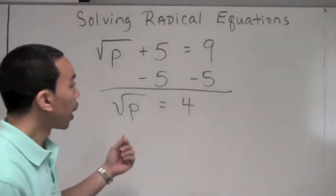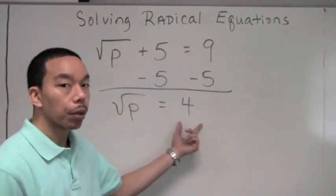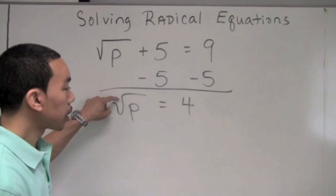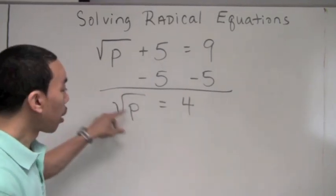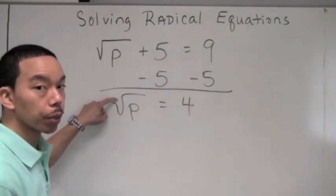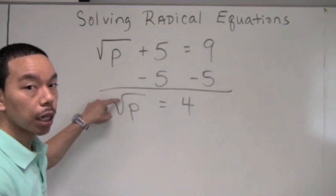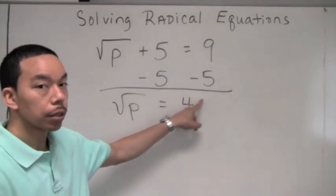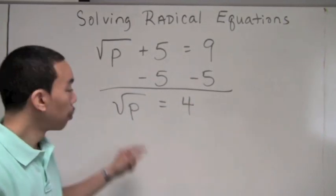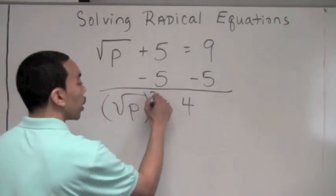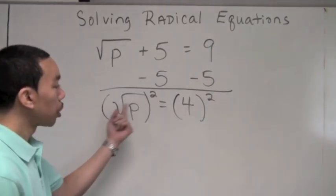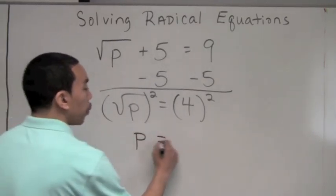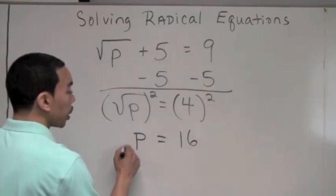Step two says that once we've isolated the radical, we raise each side to a power. The index here is implied to be two because it's a square root, so we square both sides. When we square a square root, we're left with the radicand, which is p. Four to the second power is 16, so p equals 16.